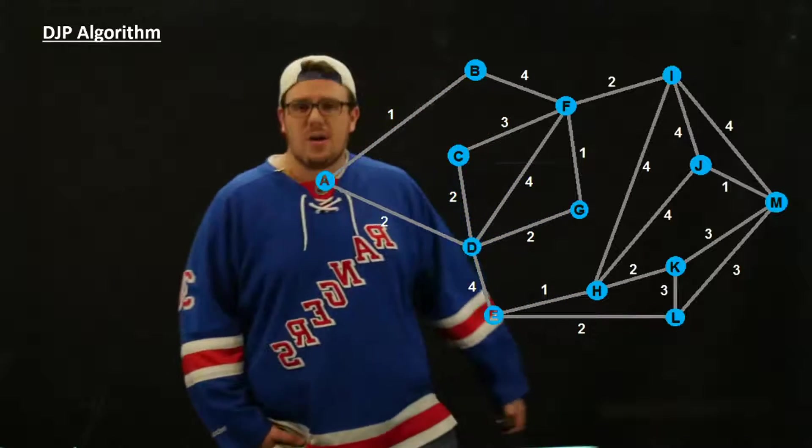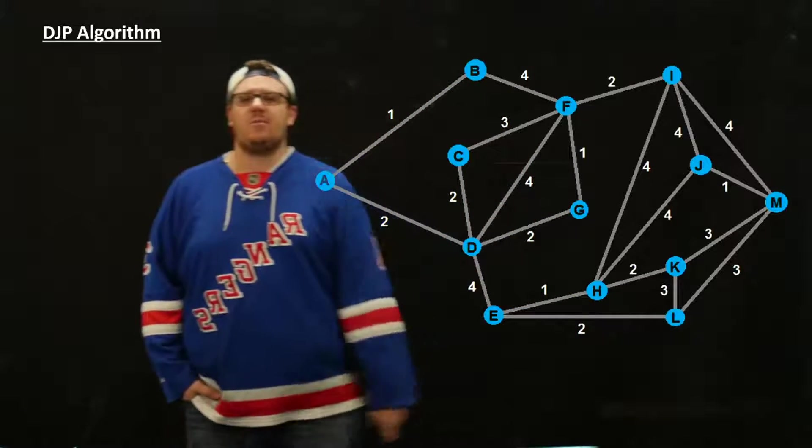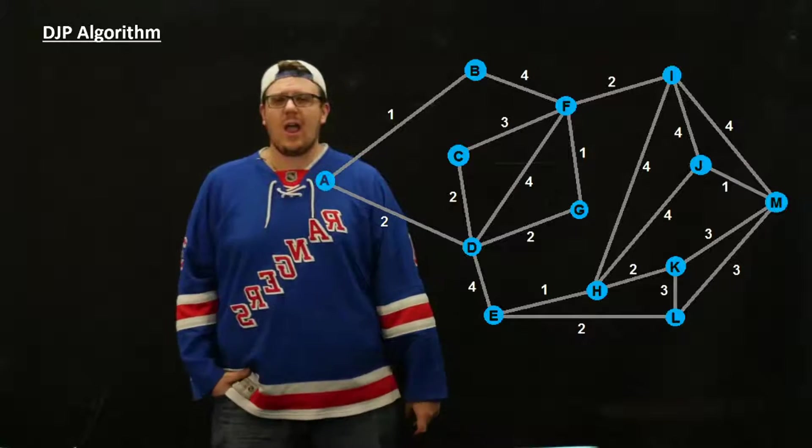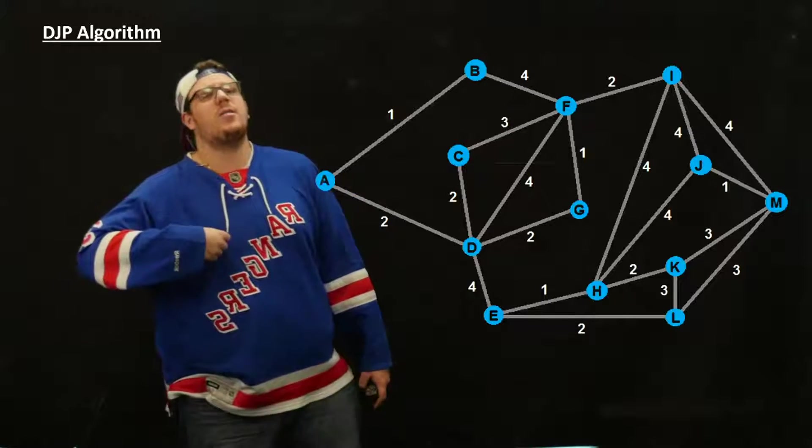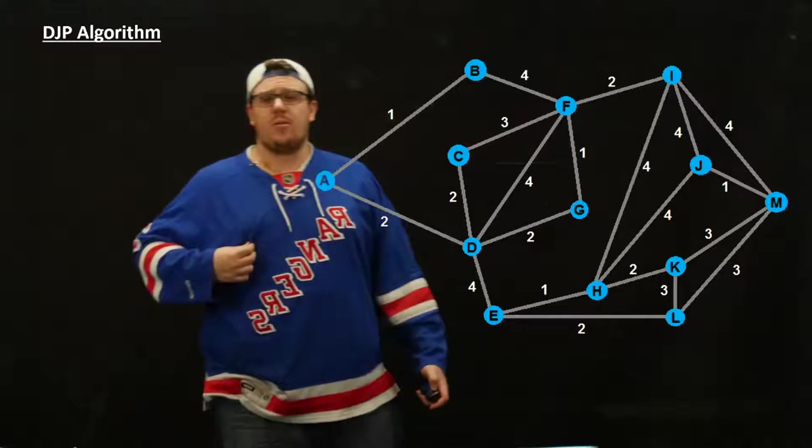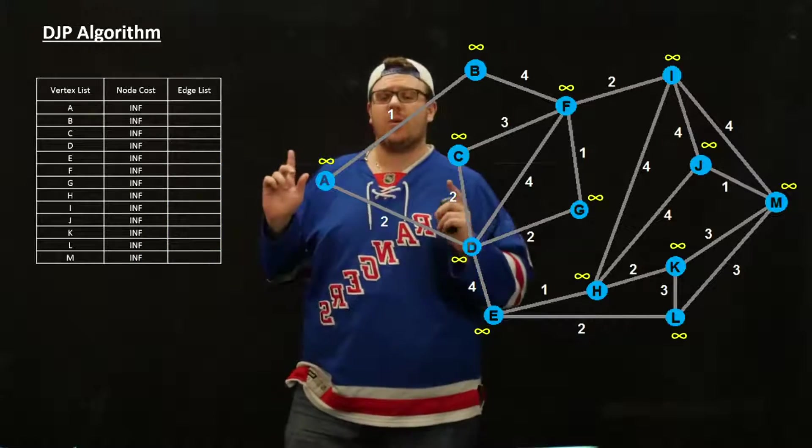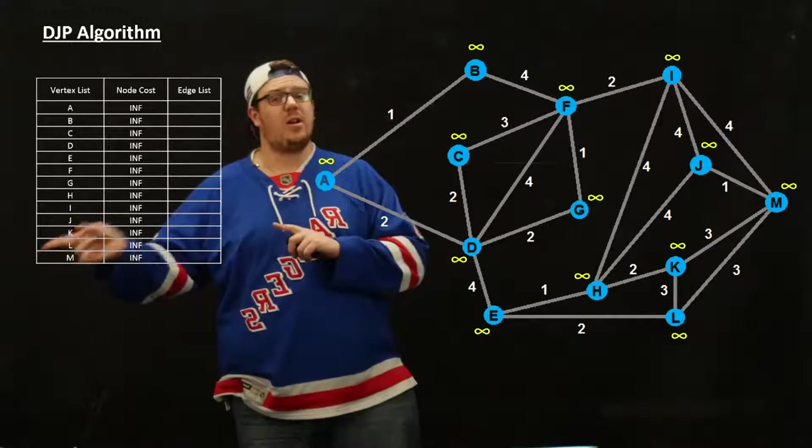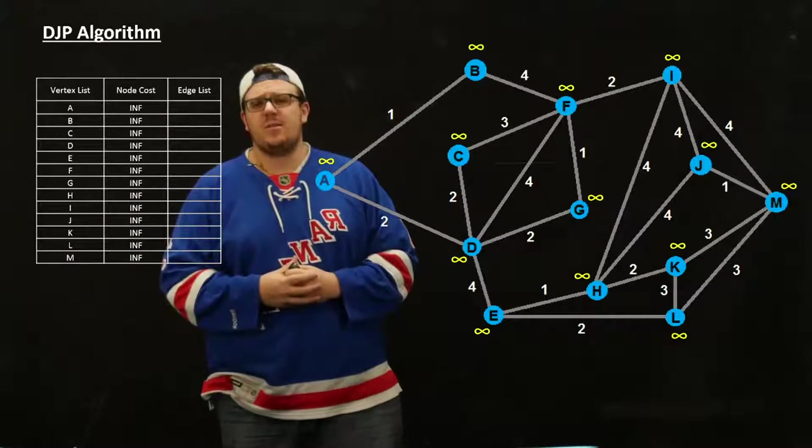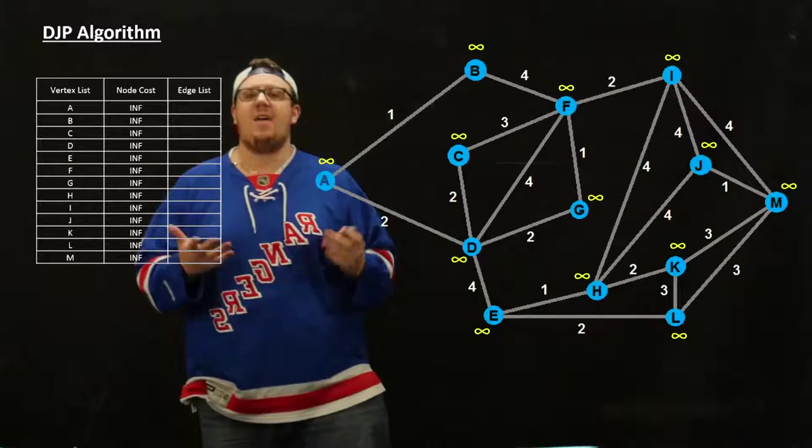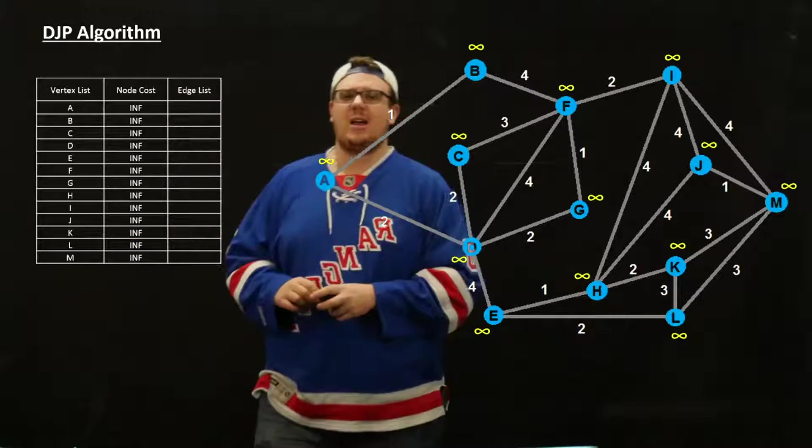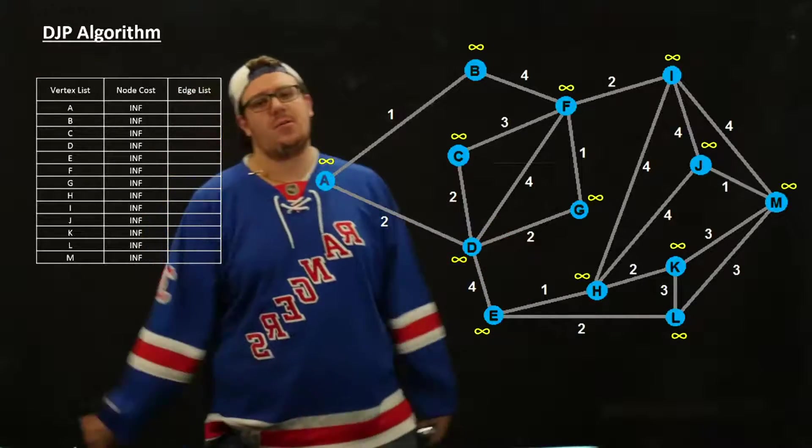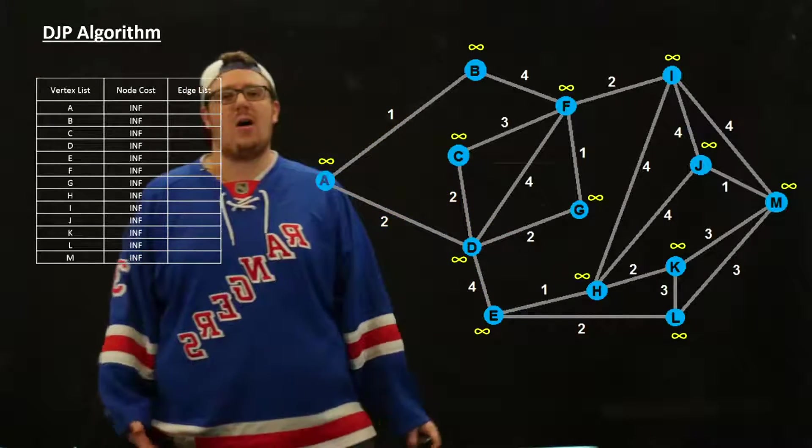We're going to come back with our tree that we've been working with, and this process finds a minimum spanning tree just like Kruskal's algorithm does. We're going to do it like we would in a computer. The first thing you do is assign a weight to every node in the graph. Those weights are all initialized as infinity, so they're all an infinite distance away from everything.